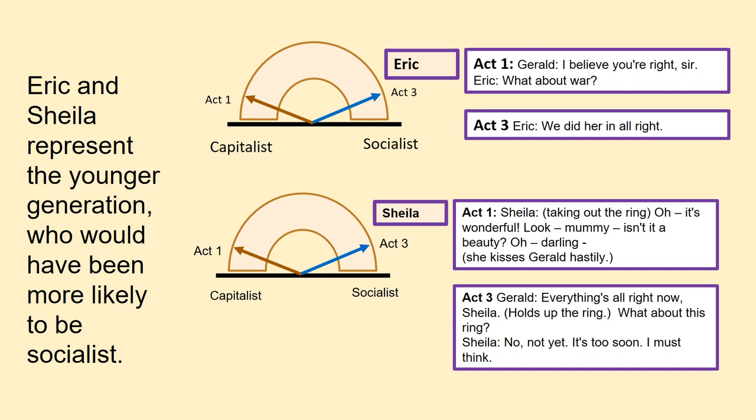Eric and Sheila represent the younger generation, who would have been more likely to be socialist. At the start of the play they are both capitalists; however, by the end they become socialist, and you can see this in quotations. For Eric, you have the conversation between Gerald, Eric, and Mr Birling where Mr Birling talks about how unlikely war is, Gerald says 'I believe you're right,' and Eric says 'what about war?' — showing he has doubts about blindly following the older generation's views and is starting to question them. But it always comes back to him being half shy, half assertive — never fully committed to arguing his point across.